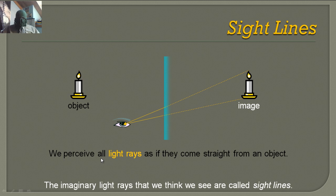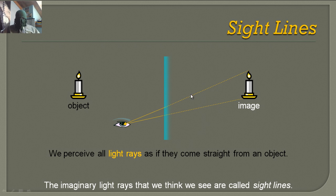We perceive all light rays as if they come straight from an object. What we actually perceive is the image — receiving the light rays as if they came straight into our eye, even though originally they came from the other side and reflected off the mirror. The imaginary light rays that we think we see are called sight lines.